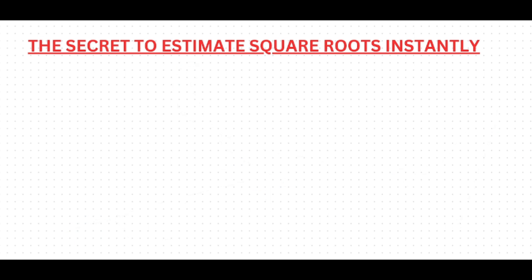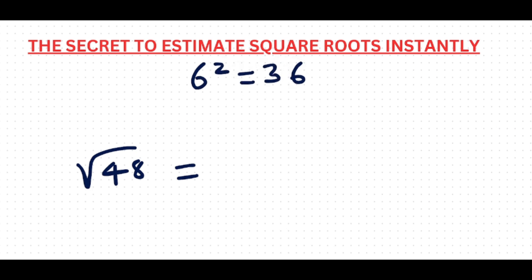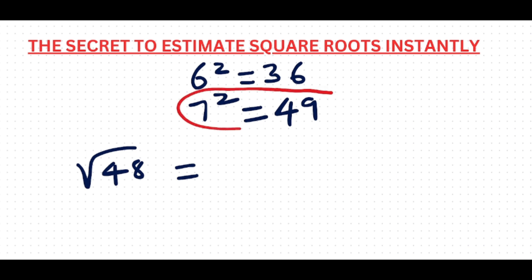Let's do another question — say you're finding the square root of 48. You know that 48 is also not a perfect square. The first step is to find the perfect squares nearest to 48. So 6 squared is 36, and 7 squared is 49. Which is the nearest perfect square to 48? Yes, it's 49.